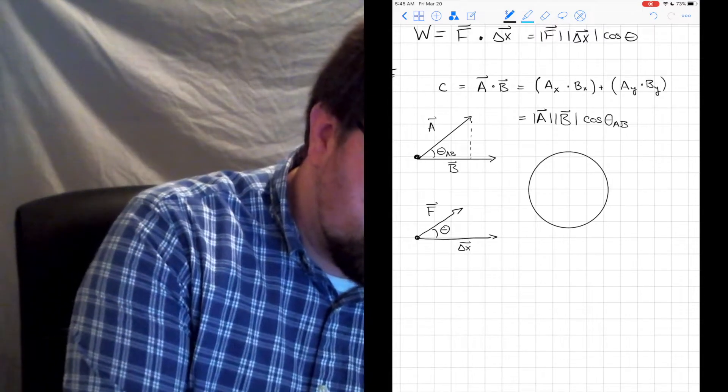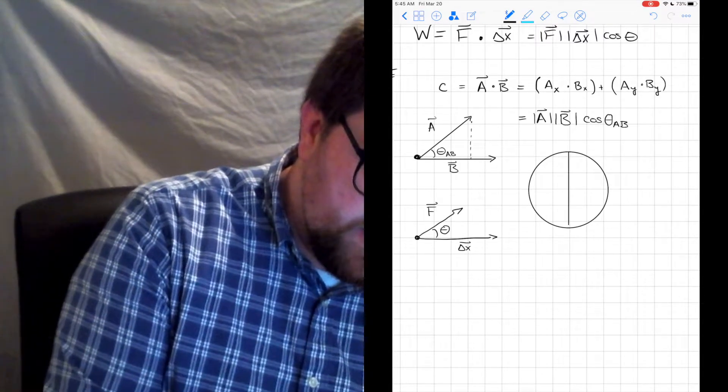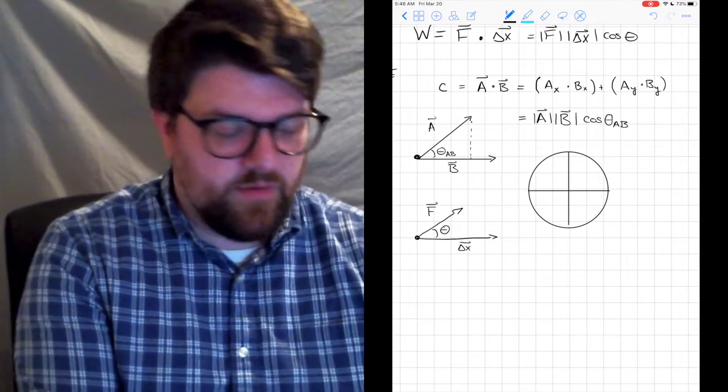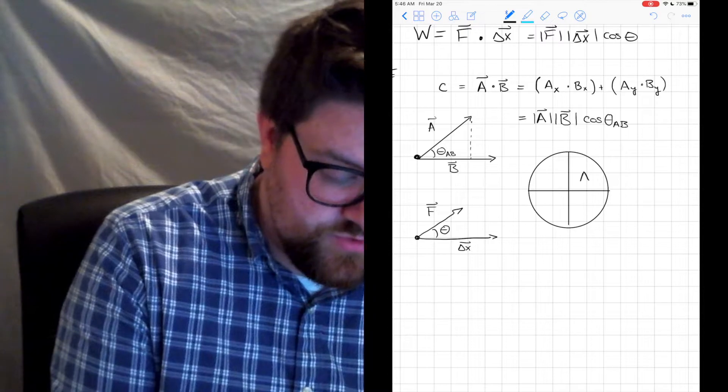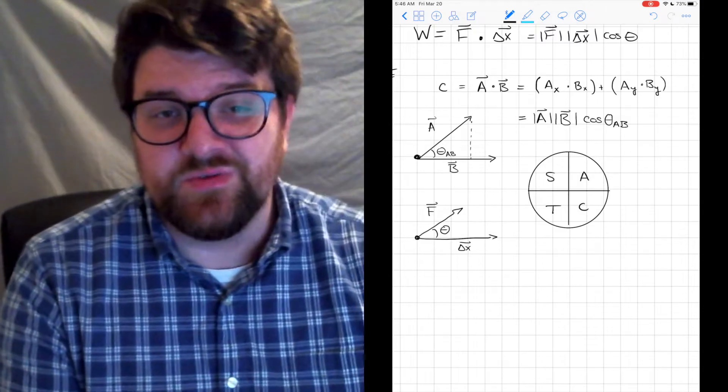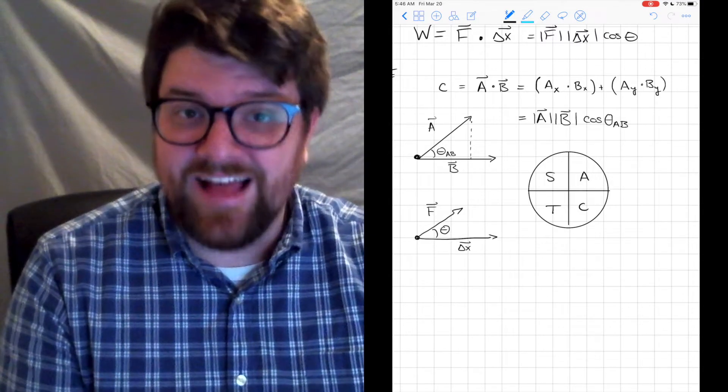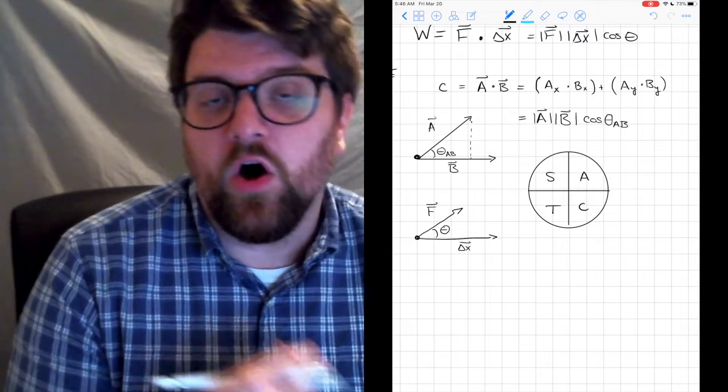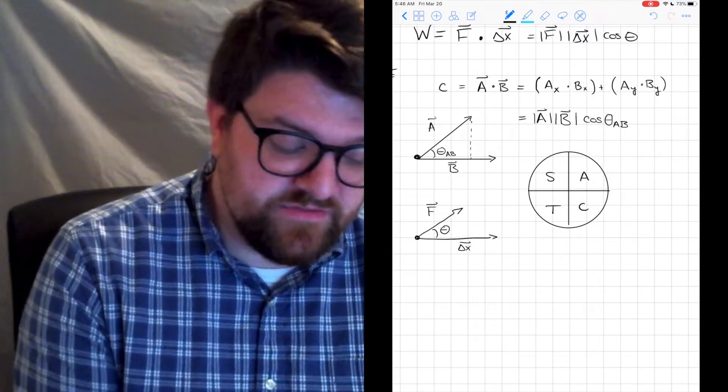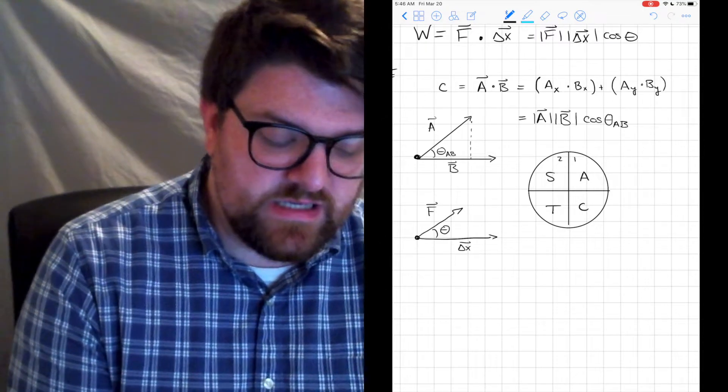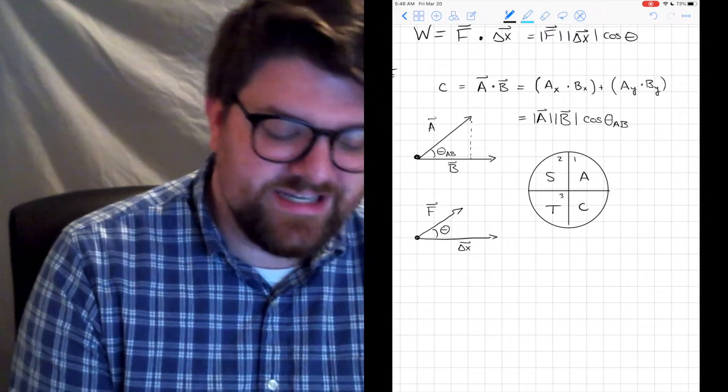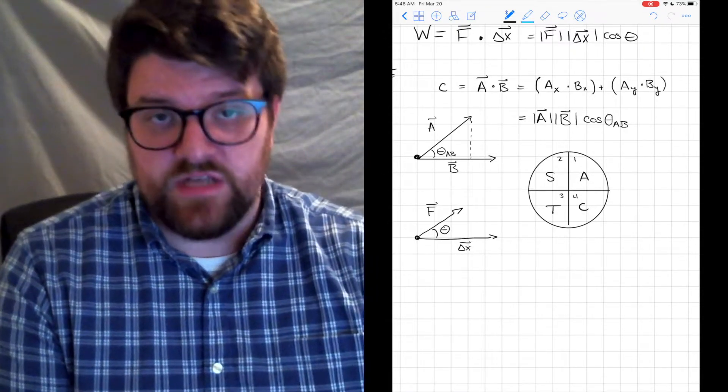So a quick reminder about unit circles, only because I find them to be super useful for quick remembrances of trig functions. I say all students take calc. It's not always true. So maybe a smart trig class is a little bit better. But what we're saying is that all the trig functions are positive in the first quadrant. In the second quadrant, only sine is positive. In the third quadrant, tangent is positive. And in the fourth quadrant, cosine is positive.